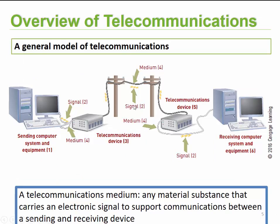Let's look at the general model for telecommunications. Typically you would have a sending and a receiving computer — a person sending a message and a person receiving a message. That message would be sent over a cable, also known as a medium, and go to a telecommunications device. In the older days this would have been something like a modem, which converts the computer's digital signal — ones and zeros — into an analog signal.